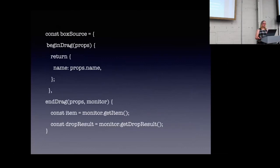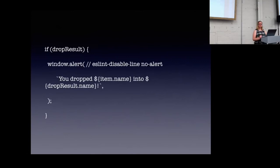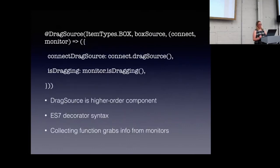In my project I also have a couple of other properties I want to keep with what I'm dragging. Then we have our endDrag and we pass it props and monitor. Monitor is a wrapper that grabs the changes to the state of the item as it's being dragged — when we grab the item and when we drop it. We have an alert set for when we drop the item into the drop target, because who doesn't like pop-ups, right? This is one of the places where you'll notice the ES7 decorator syntax with the @ symbol.